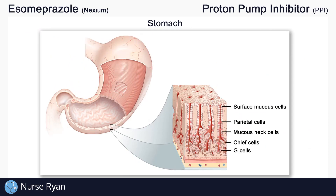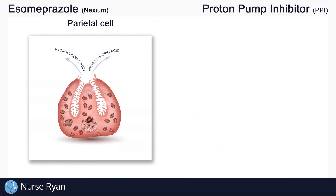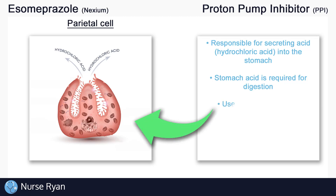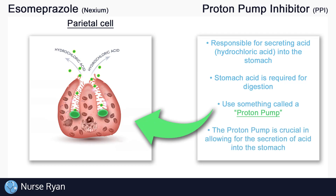In our stomach, we have lots of different types of cells. The ones that we're interested in today are called the parietal cells. The parietal cells are responsible for secreting acid into the stomach, and it's this acid that helps to break down food for digestion. Part of how the parietal cells secrete acid is by using something called a proton pump. The proton pump is crucial in allowing for the secretion of acid from the parietal cells into the stomach.